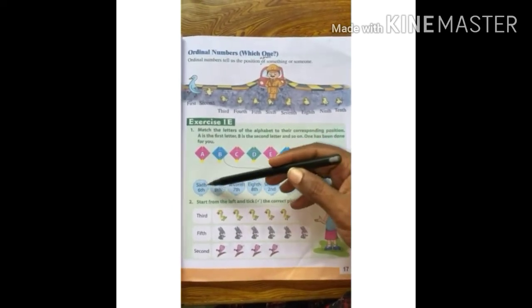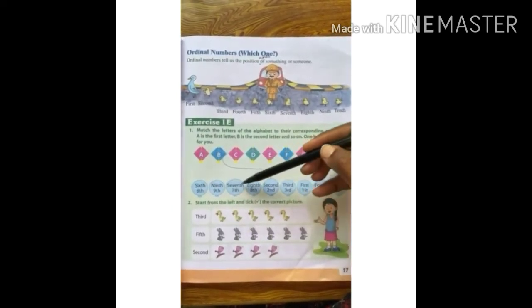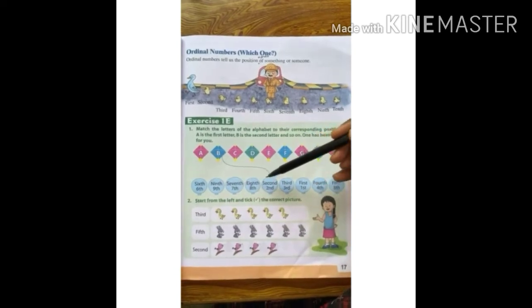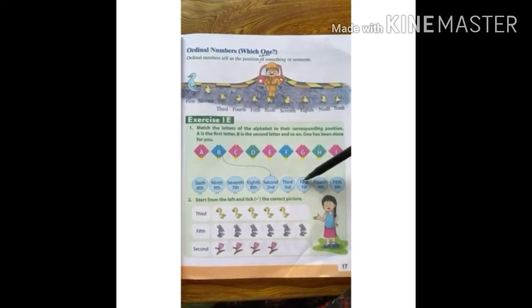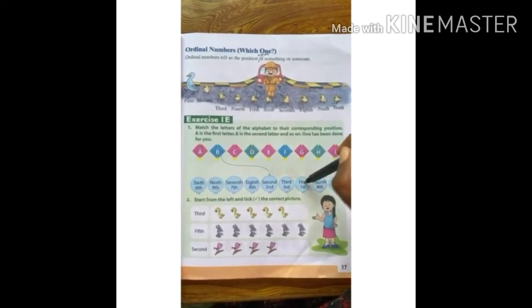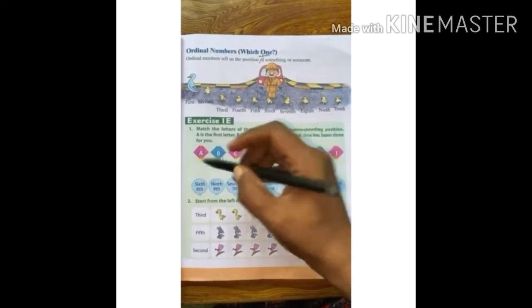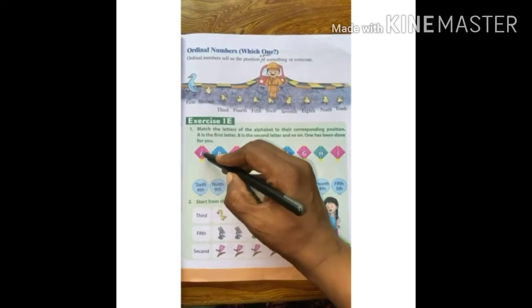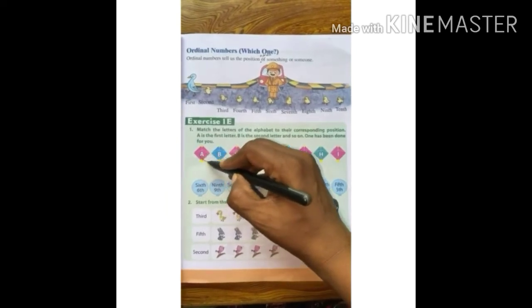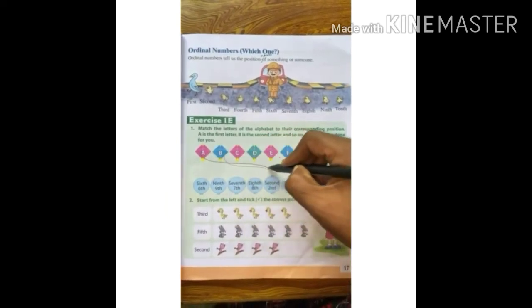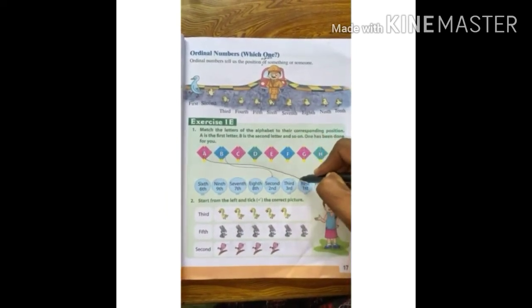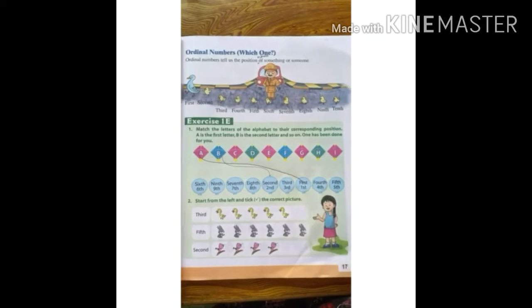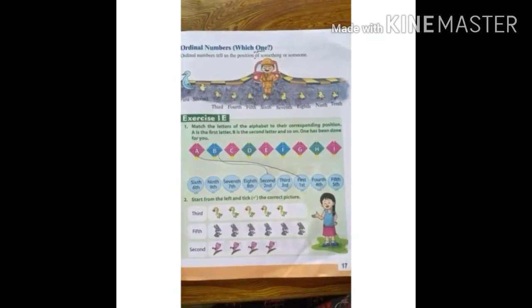Where is the first? The options are 6th, 9th, 7th, 8th, 2nd, 3rd and 1st. So let us draw a line from the letter A to the 1st position. Done.